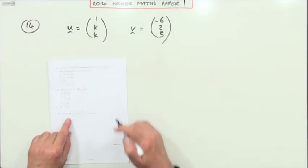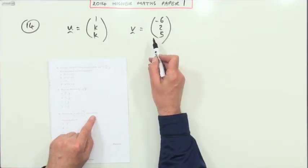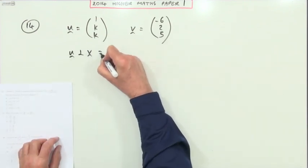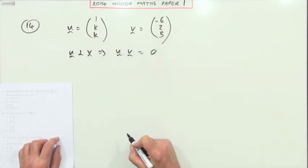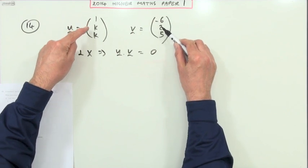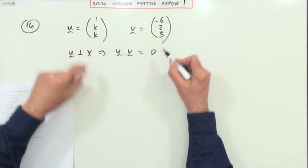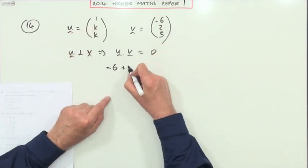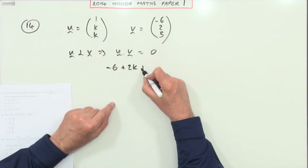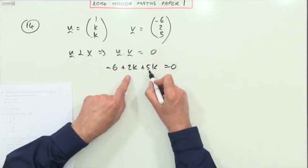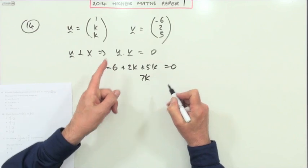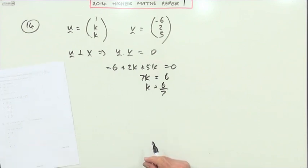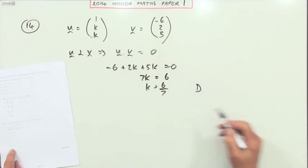In number 14, two vectors perpendicular, scalar product is 0 if they're perpendicular. If u is perpendicular to v, it means u dot v equals 0. Scalar product: multiply the corresponding components and add them up. 1 times negative 6 is negative 6, 2 times k is 2k, 5 times k is 5k. That should equal 0. That comes to 7k. Bring the negative 6 over as a 6, then divide by the 7. k should be 6 over 7, which is answer D.